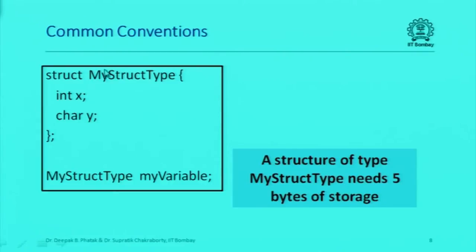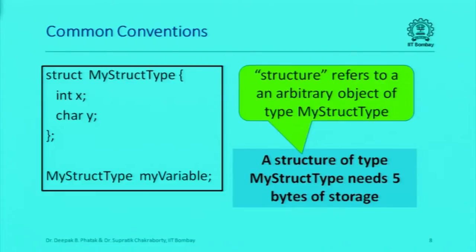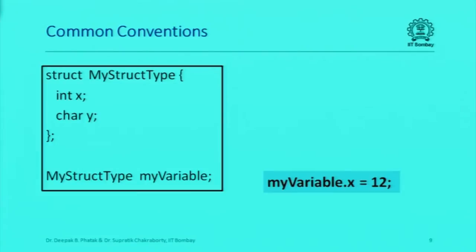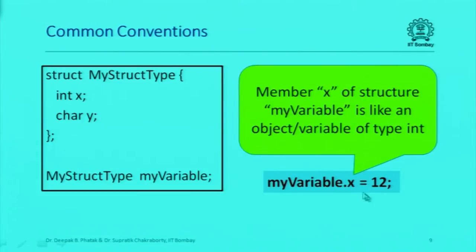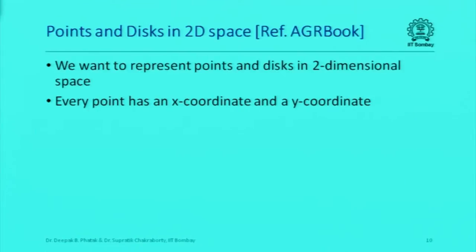Sometimes when we say a structure of type my struct type needs five bytes of storage, I'm referring to a generic object of that structure. All of this should be fairly obvious, but we've highlighted it so there is no confusion. Depending on the context, when I use the word structure I could mean a generic structure or an object of that structure, and it should be obvious from what we are discussing.